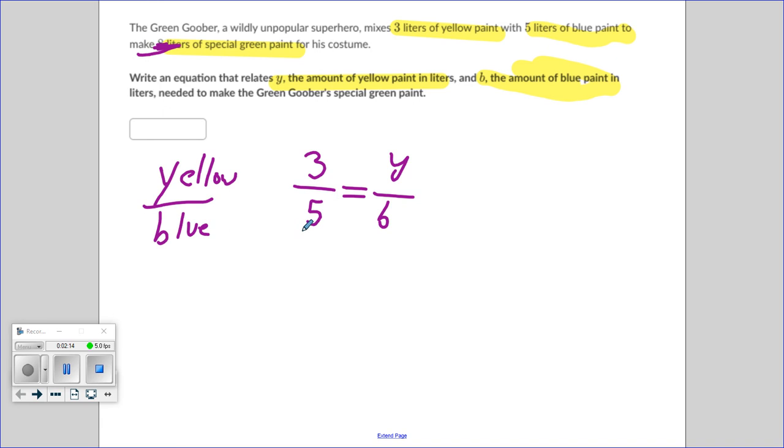In fact, I like to do the cross products. Five times Y is 5Y equals three times B is 3B. And in this particular case, I'm going to solve for Y, so I get Y by itself. So I'm going to divide both sides here by five to get Y by itself. So I get 5Y divided by five is one Y.